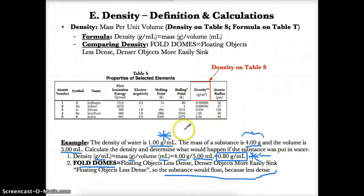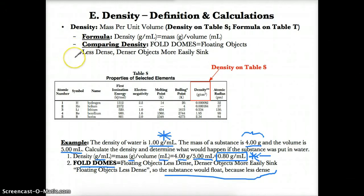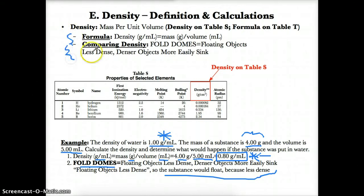From this section, remember two important things: first, FOLDS DOMES — floating objects less dense, denser objects more easily sink. Also remember that density equals mass divided by volume, and it can be in grams per cubic centimeter or grams per milliliter depending on the units of mass and volume.